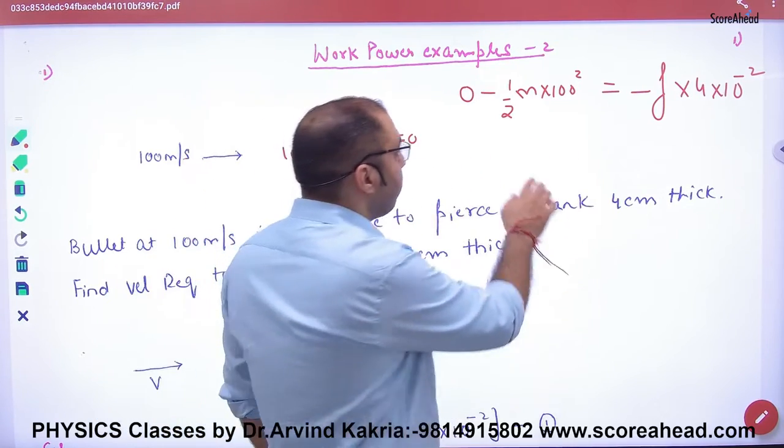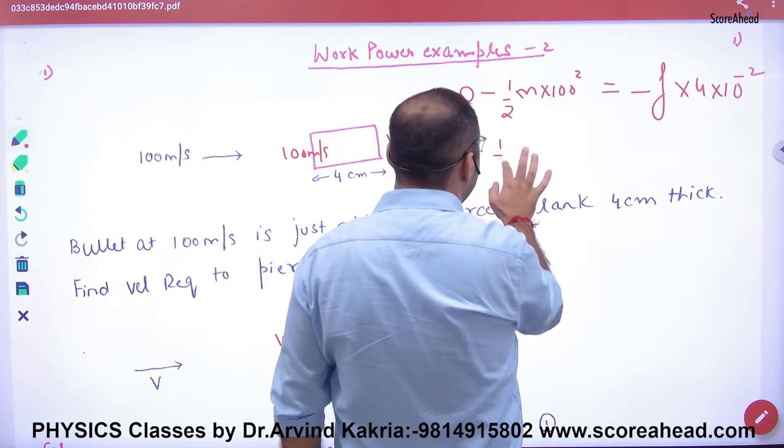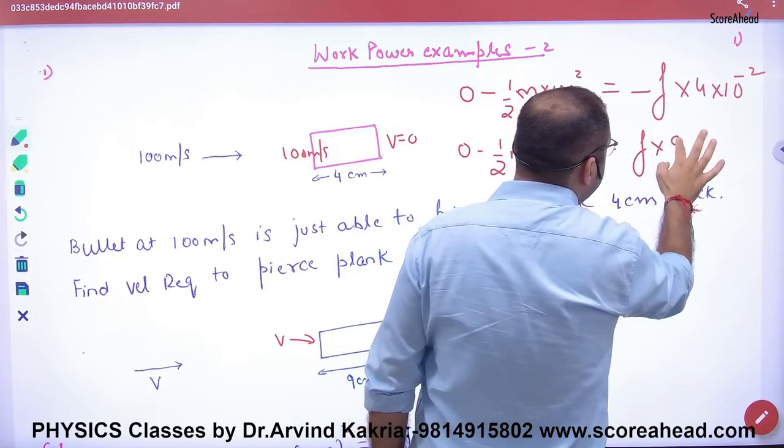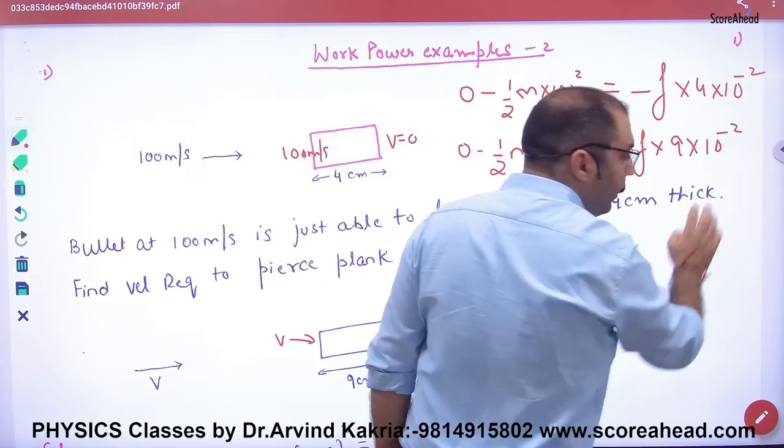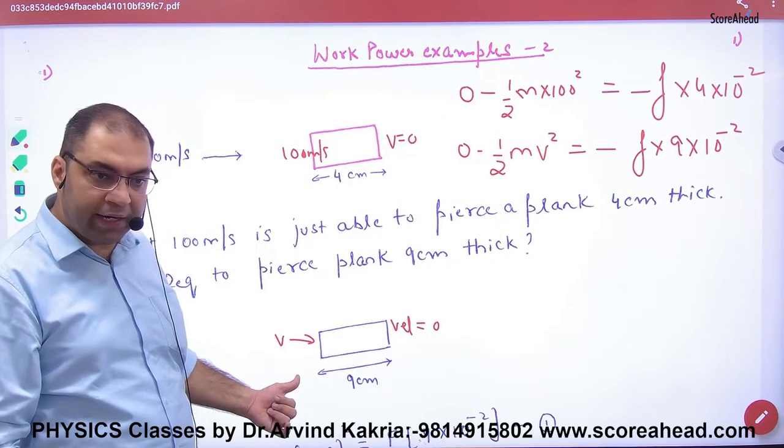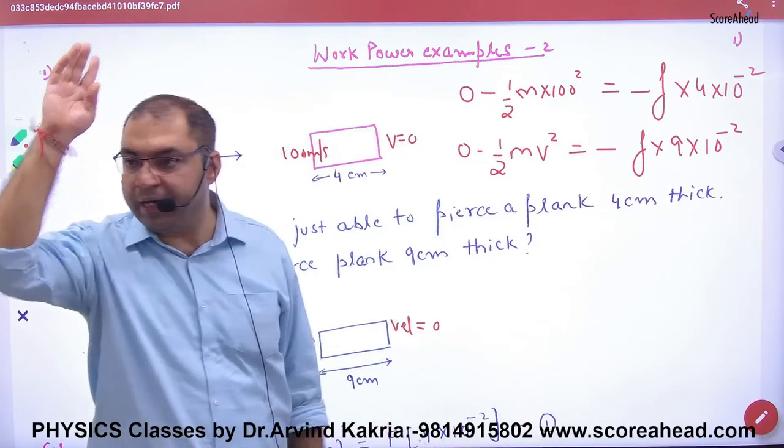Case number 2: in case number 2, final velocity is 0, initial velocity is V, and friction will work again but how much distance? 9 centimeters. Same principle: change in kinetic energy is work done by friction.